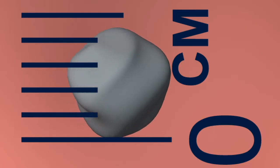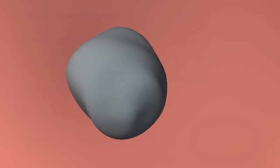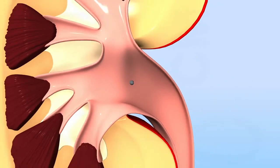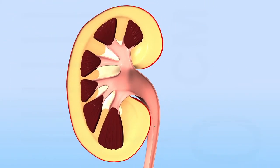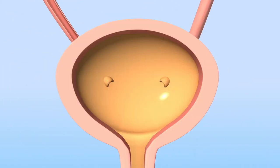Most stones less than five millimetres have a good chance of passing down the entire ureter and into the bladder. The stone then gets passed out when you urinate. This process can take days to weeks to occur and is often associated with attacks of severe pain. If the stone is greater than five millimetres, it may never pass into the bladder, hence a cystoscopy and ureteric stent are indicated.